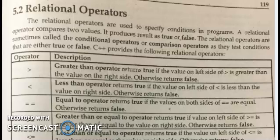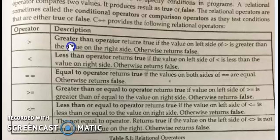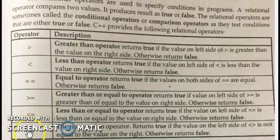Relational operators compare two values and the result may be true or false — not both simultaneously; only one result occurs at a time. Here are the symbols: greater than (>), less than (<), equal to (==), greater than or equal to (>=), less than or equal to (<=), and not equal to (!=). The exclamation sign followed by the equal sign means not equal to. In mathematics you use these same comparisons: greater than, less than, equal to, greater than or equal to, less than or equal to, and not equal to.